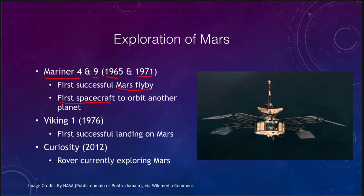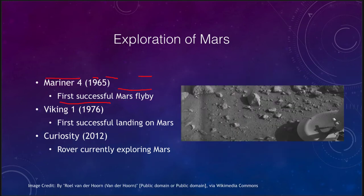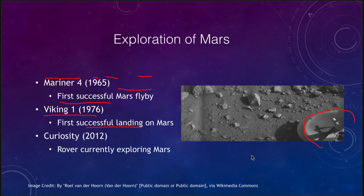A little later in the 1970s we had the Viking craft. The Viking 1 craft was the first successful landing on Mars, and you can see it here — this is part of one of the feet of the craft as it landed, and you can see some of the Martian rocks close to where it landed. That was a chance to explore and look for life. The Viking lander drilled into Mars, looking for samples and trying to test those samples for any signs of life.